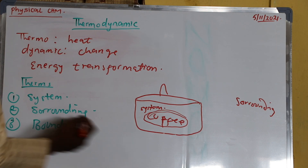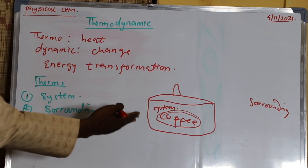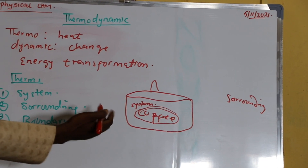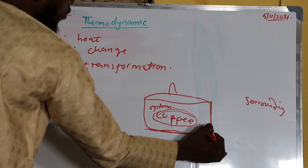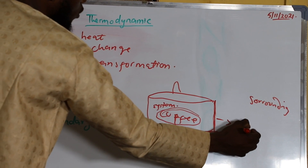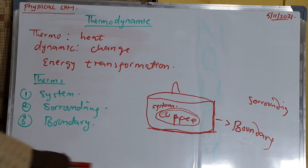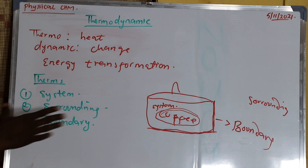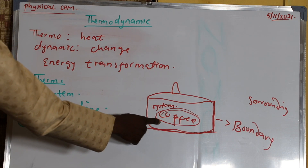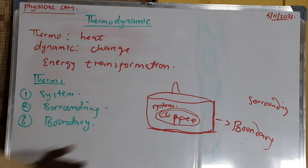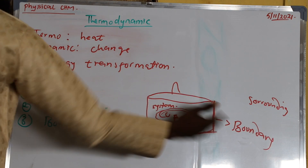Then boundary. Boundary is anything that differentiates between surrounding and the system — that is the wall of the container, the cylinder, or the membrane. This is what we call the boundary; it differentiates between surrounding and the system. So there are three terms: system, surrounding, and boundary. Inside the container where we are preparing coffee is the system, outside is the surrounding, and what differentiates between them is the boundary.